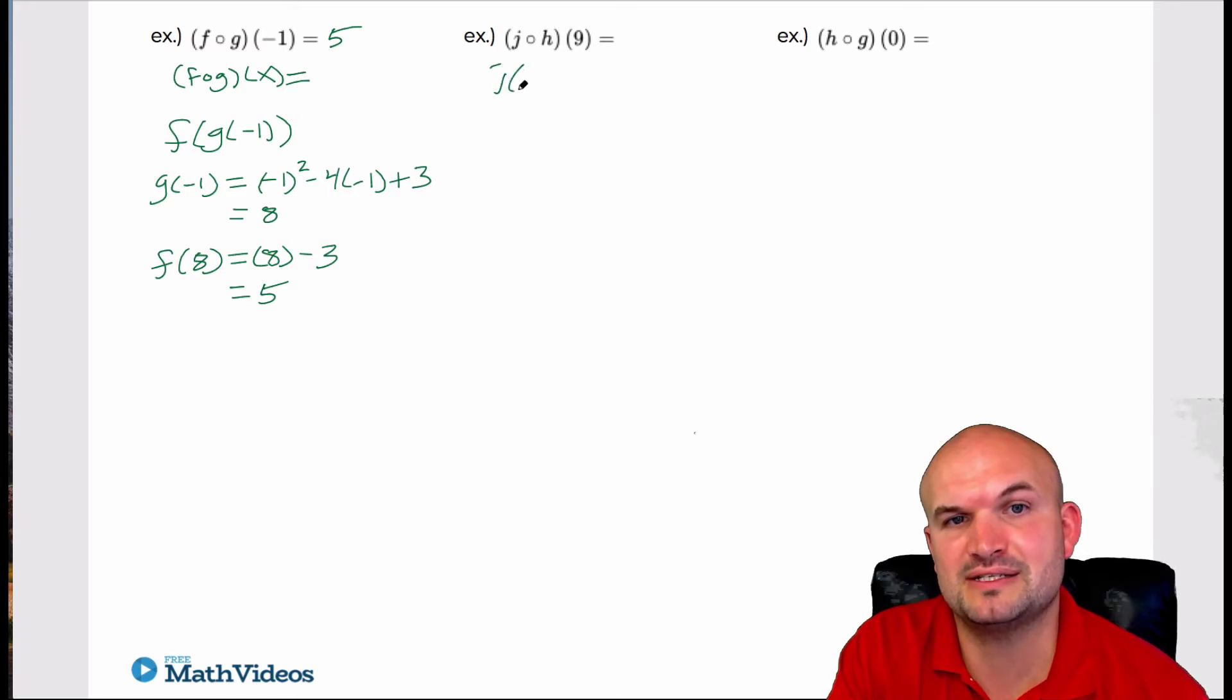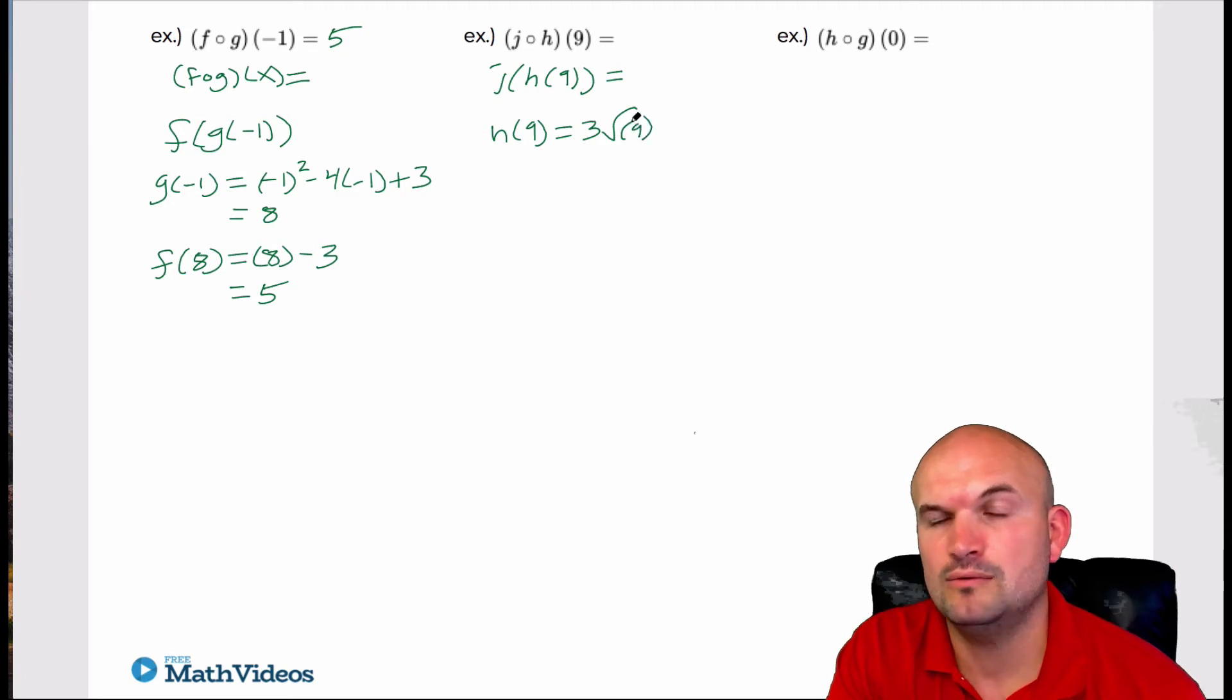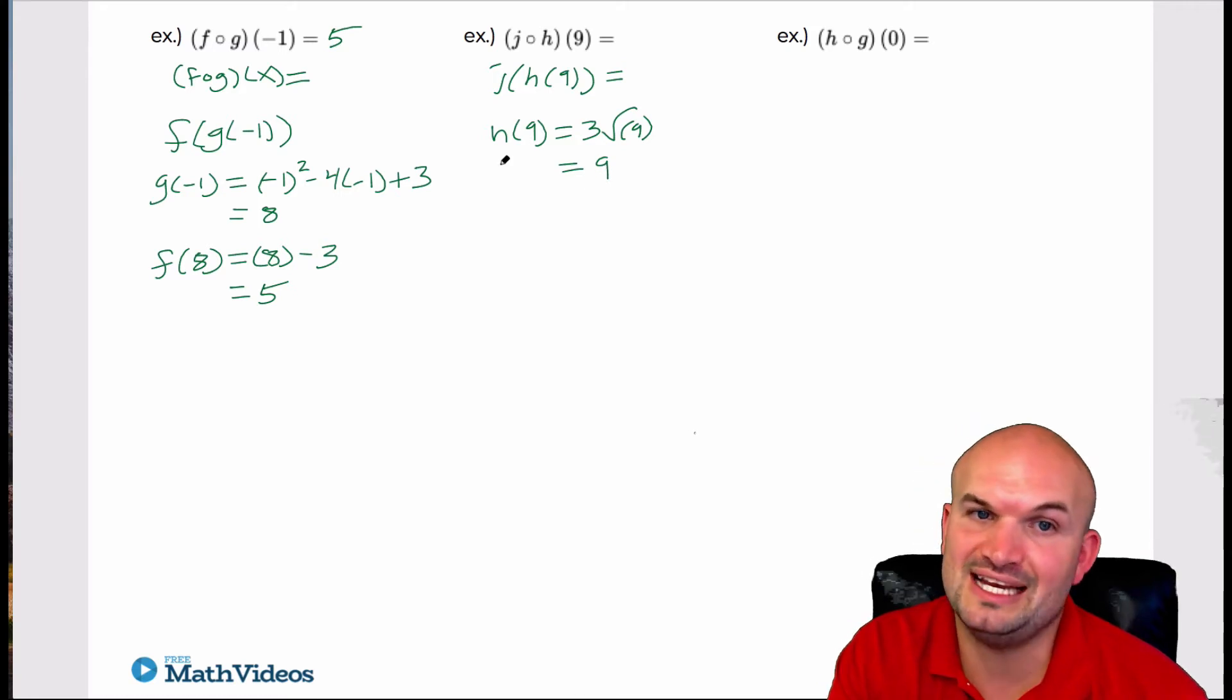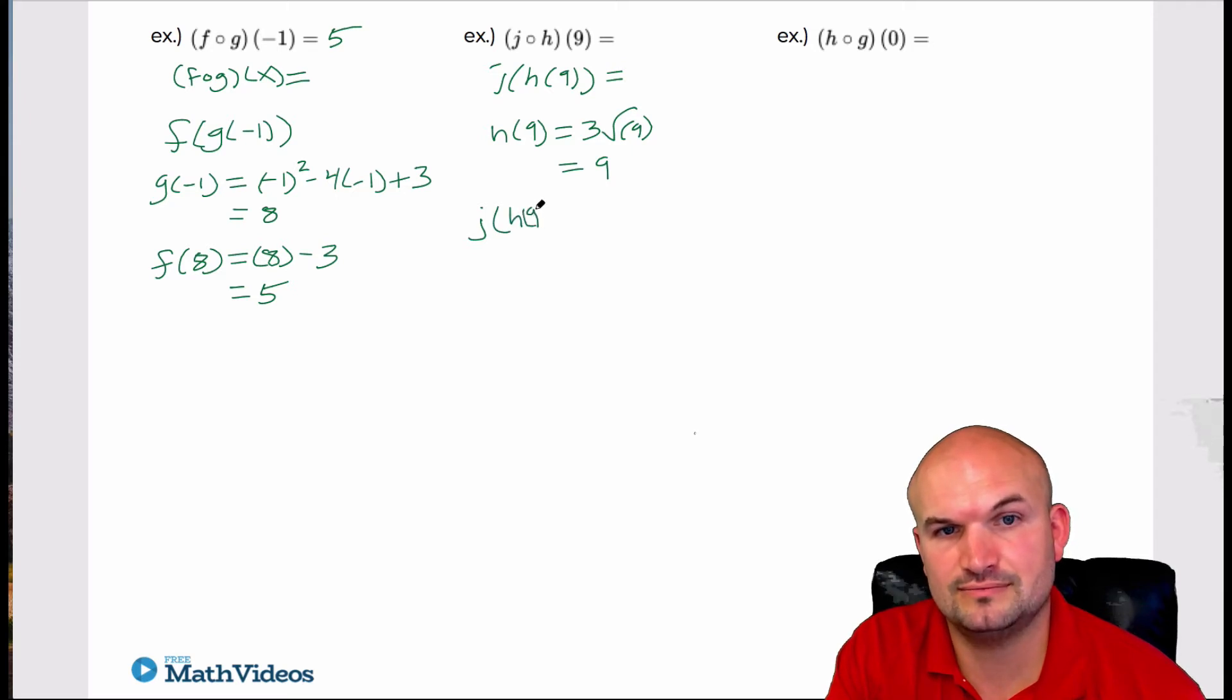Now again, remember this is basically saying h of nine. So h of nine, well, let's figure out what h of nine would be. H of nine is three square root of nine. Well, square root of nine is three, three times three is equal to nine. And then we just need to plug nine into our j of x function. So j of h of nine equals, let's see, that's going to be two over two times nine and that's minus one, plus one. Yeah, good. So let's see here. Two times nine is eighteen plus one is nineteen. So that's two over nineteen.